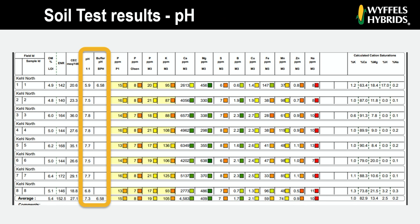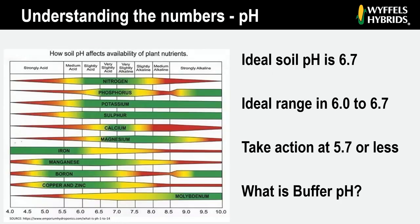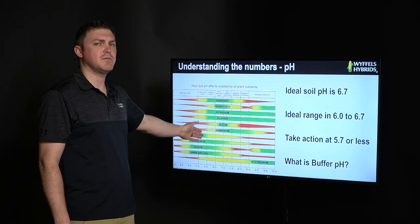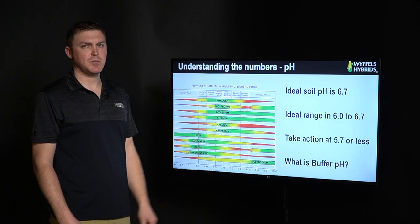The first thing I always do when I get a new soil test is I go straight to pH. pH is important to all nutrient availability on your operation, so it's obviously the first thing we want to tackle. This particular soil test has eight samples on it, but I'm going to go straight to the bottom and focus on the average for the field. pH is in fact unitless, meaning there's no number after it to indicate anything, and it's important because it affects all the nutrient availability for all the other nutrients that are essential to plant growth.